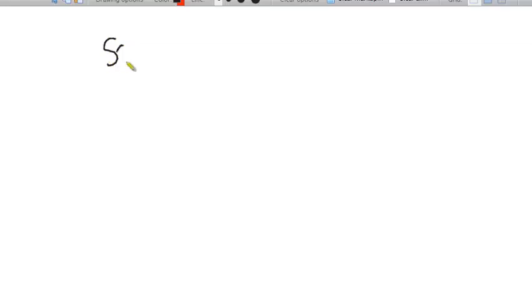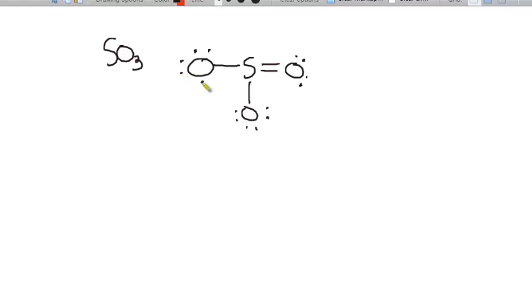Now let's look at what happens as we change the number of domains on the central atom. For SO3, sulfur trioxide, the Lewis structure has three oxygens attached to the central sulfur, with at least one double bond needed to satisfy the octet rule. On the central atom: one double bond (one domain), one single bond (second domain), and another single bond (third domain) — so three electron domains total.